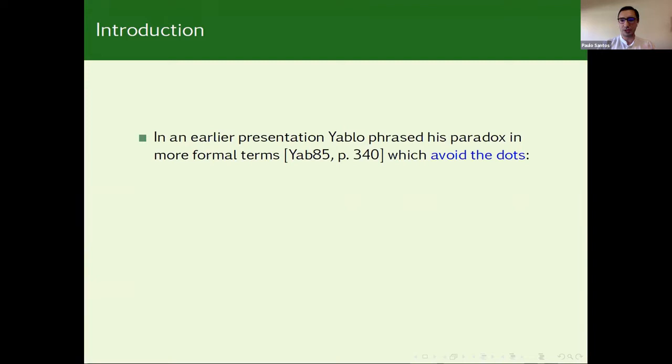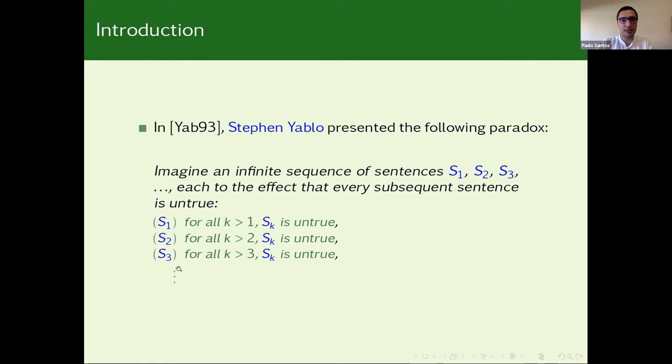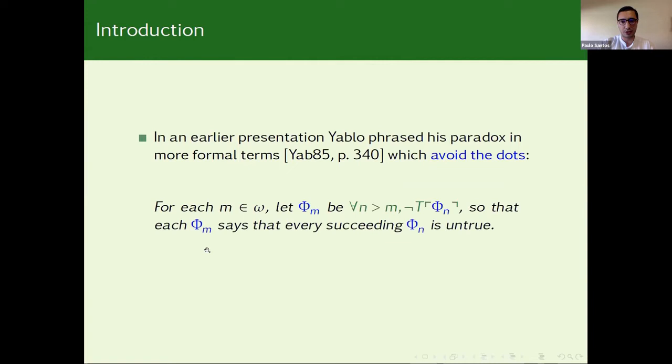In a previous presentation of this paradox, Yablo avoided the dots, and by dots I simply mean these dots, because here one could suspect that both the paradoxical nature and some kind of not having self-reference could be attributed to the dots. But in fact, one can avoid the dots.